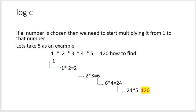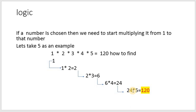What will be the logic? Suppose you take 5 as a number, then 1 into 2 into 3 into 4 into 5 is equal to 120. First you take 1 and multiply it with 1 — you get 1. Then 1 into 2 gives 2. You take that answer and multiply with 2. Then 2 into 3 is 6. Now take 6 into 4 which is 24. Then 24 into 5 is 120. At each step you are storing the result and multiplying that result with the next number — that is the logic behind it.